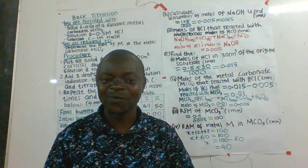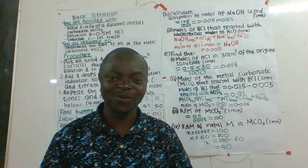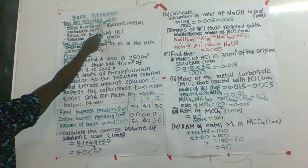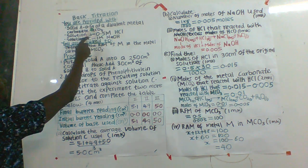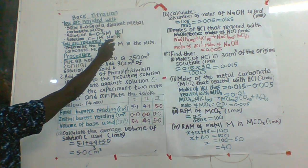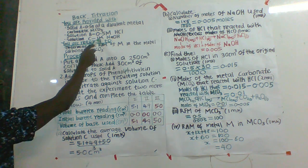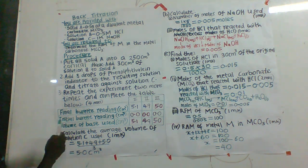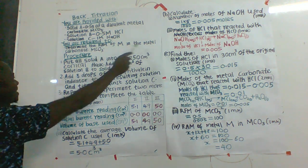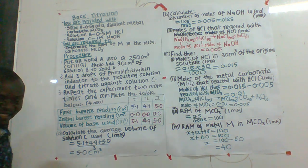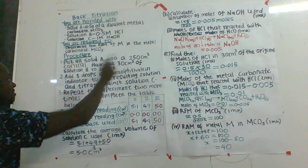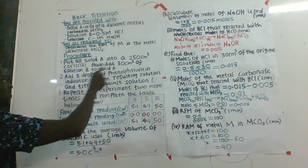Let me take you through a detailed elaboration of how back titration works through this question. You are provided with solid A, which is 0.5 grams of a divalent metal carbonate MCO₃. Then solution B, which is 0.5 molar HCl hydrochloric acid. Then solution C, which is 1 molar sodium hydroxide. The first procedure is to put all of solid A into a 250 cm³ conical flask, then add 30 cm³ of solution B to solid A.